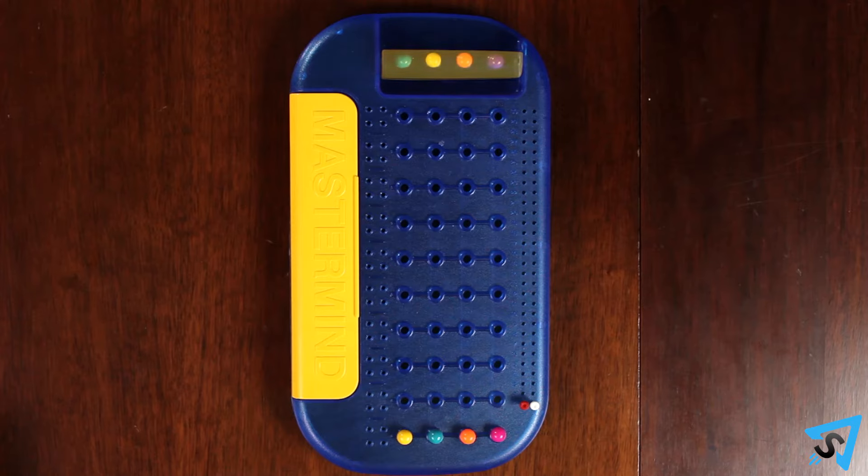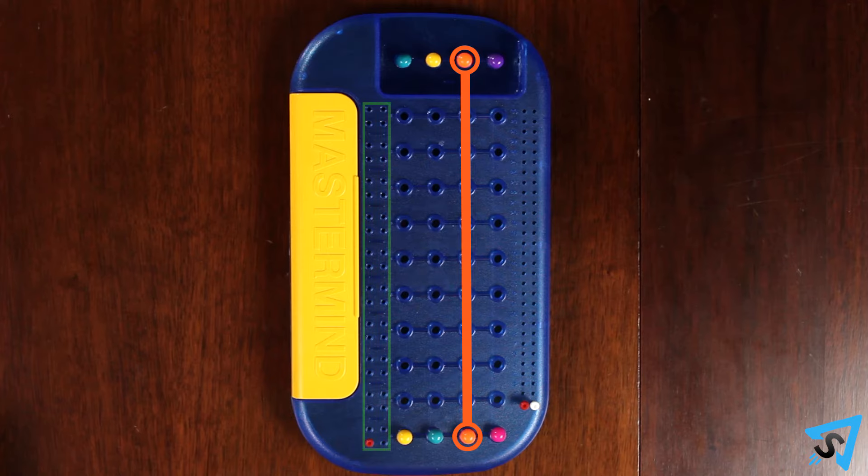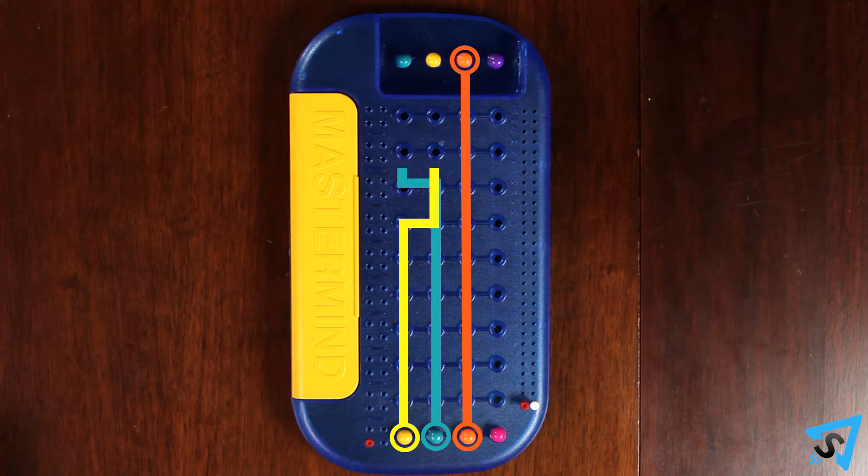For each colored peg in the right spot in the column with the hidden code, the code maker puts a red peg into the side track of the board. If the color of the peg is correct but its position isn't, then a white peg is used.